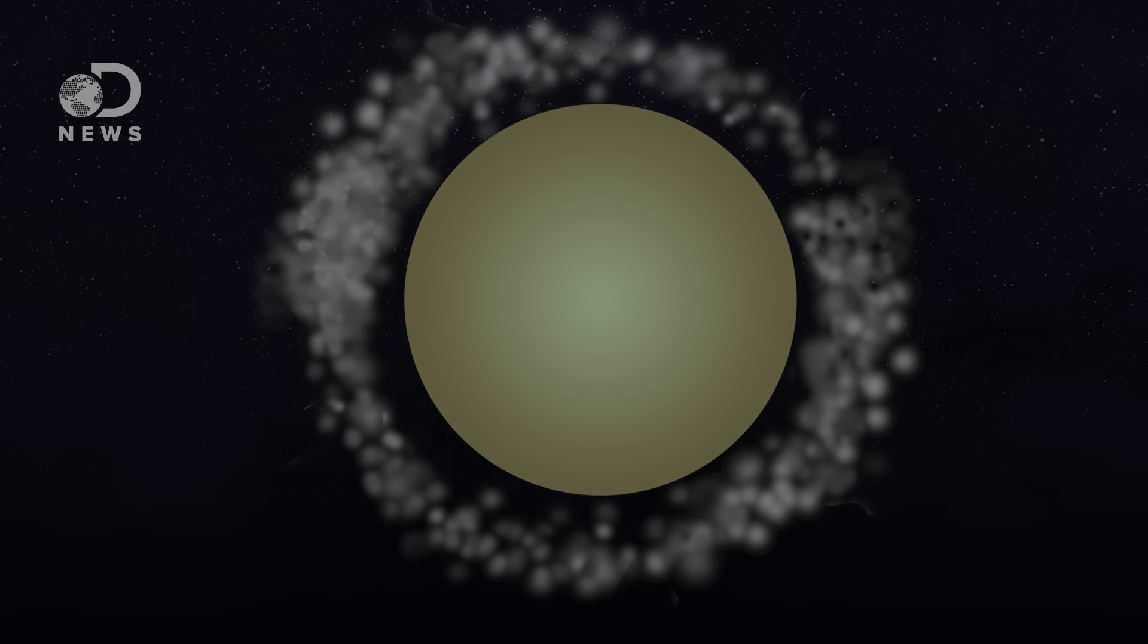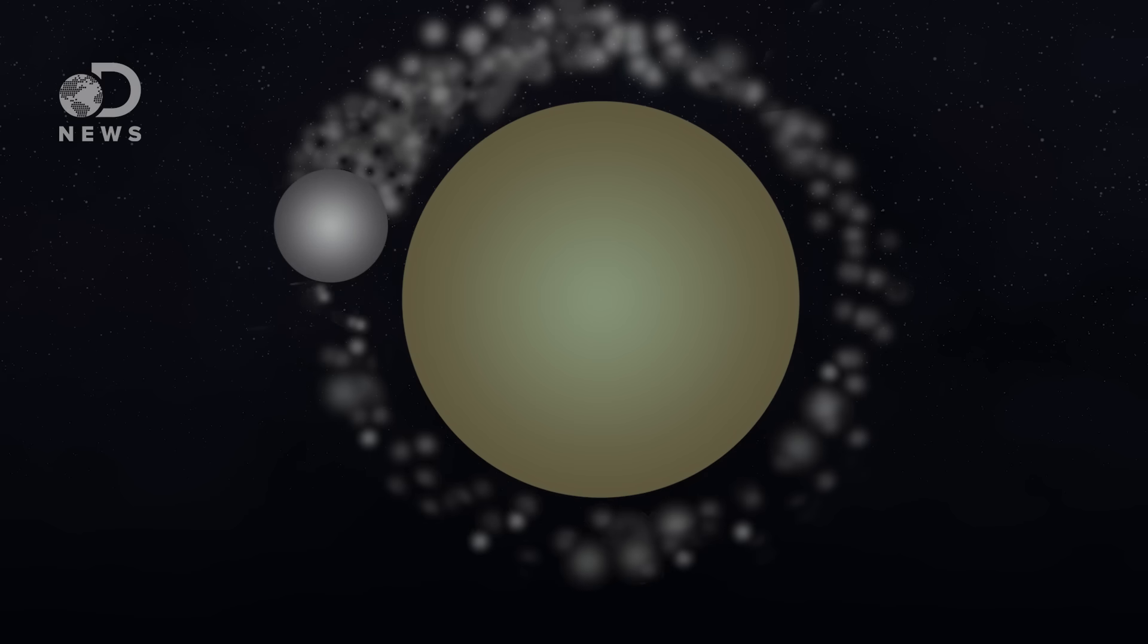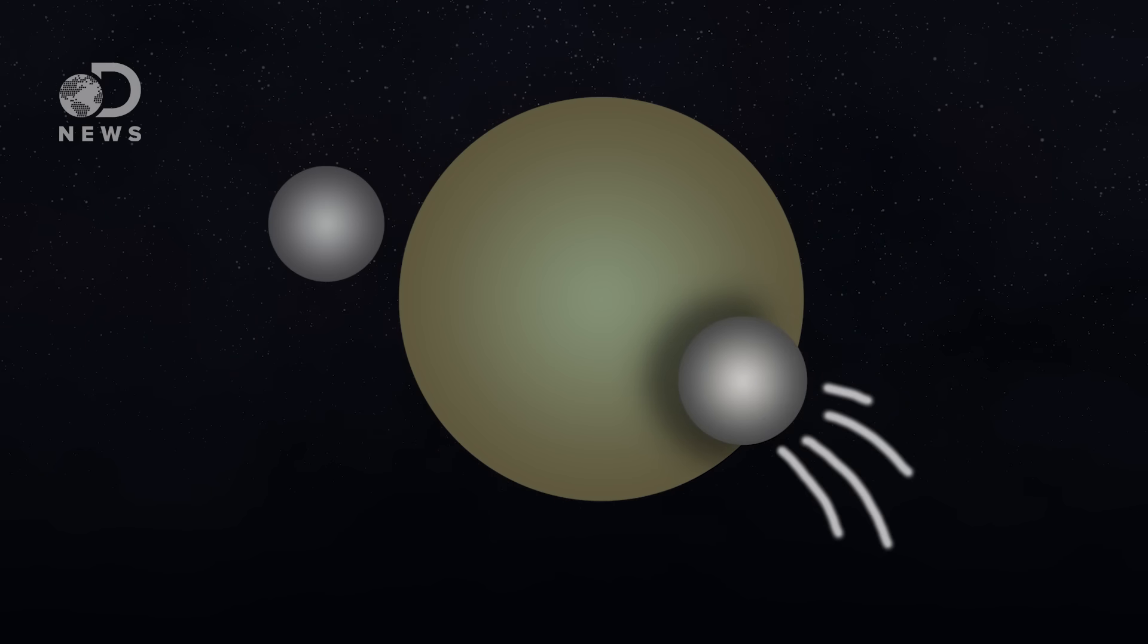Each time one hit it would kick up a cloud of debris that would settle into a ring of dust around our forming planet. Eventually the orbiting dust would coalesce and a little ball of moon chunk would move away from our planet over the course of centuries. Then another planetoid would hit the Earth and the whole process would repeat itself.